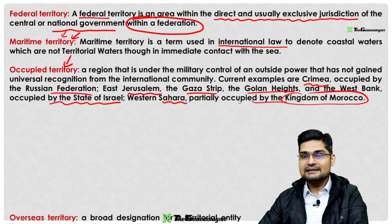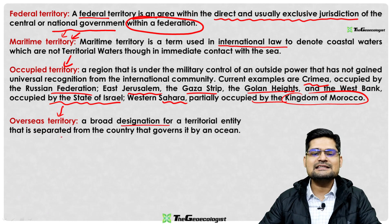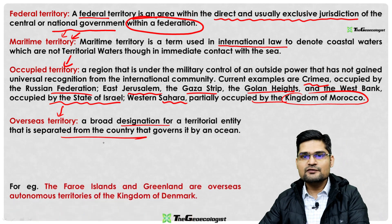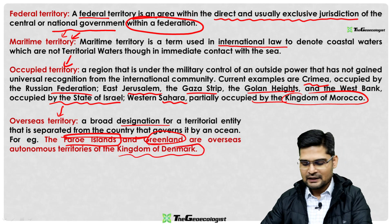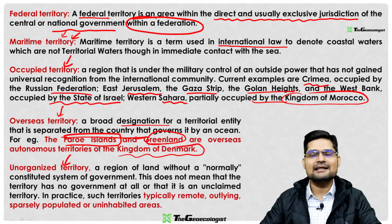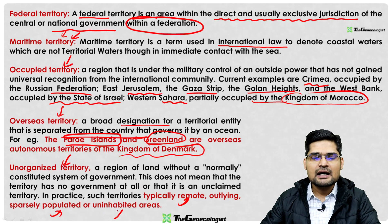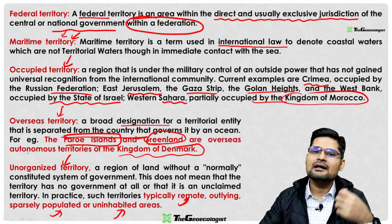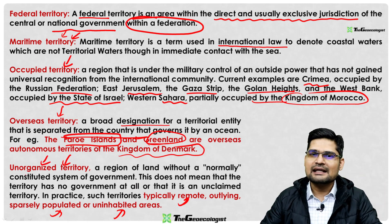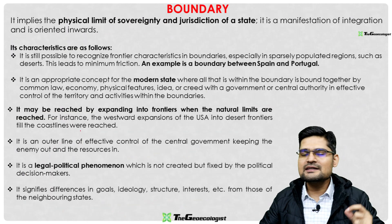Overseas territory is a broad designation for a territorial entity separated from the country that governs it by an ocean — for example, the Faroe Islands and Greenland are under the Kingdom of Denmark. Unorganized territory has no clear jurisdiction due to remoteness, sparse population, or being uninhabited — found in Australia, New Zealand, Antarctica, and areas near the poles.